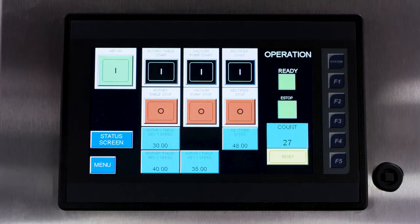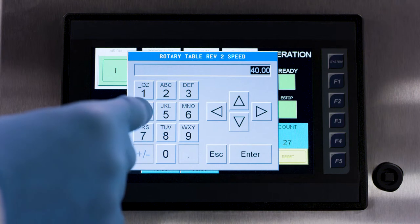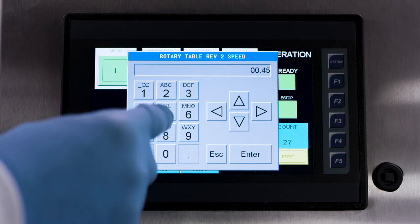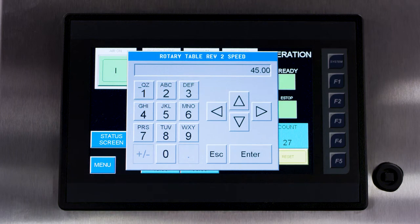You may also vary the speed of each revolution. This can be changed directly from the operation screen. To change the speed, select the revolution number and enter the desired speed in the keypad.